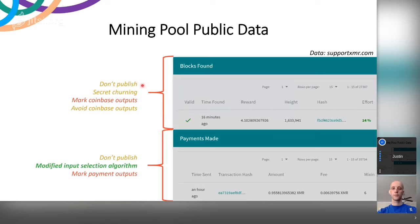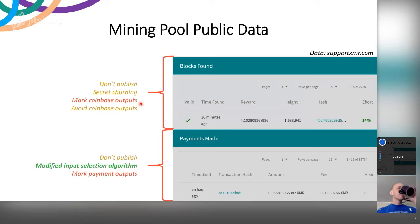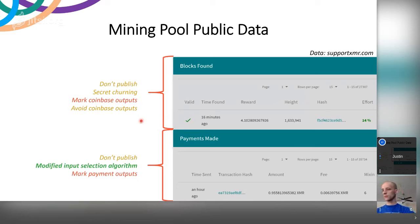There isn't really a great option for Coinbase outputs. We can say pools should not publish a list, but of course that has its own set of downsides. We can say they should churn secretly, but that has its own downsides too. Users' main options are to mark the Coinbase outputs — so they interact with the pool API, ask the pool what blocks it has mined, and then do not use those outputs — or they could just avoid Coinbase outputs altogether. There's certainly debate within the research community about what the best process is, and we're not going to focus too much on these Coinbase outputs, but it's something you should be aware of as an individual.